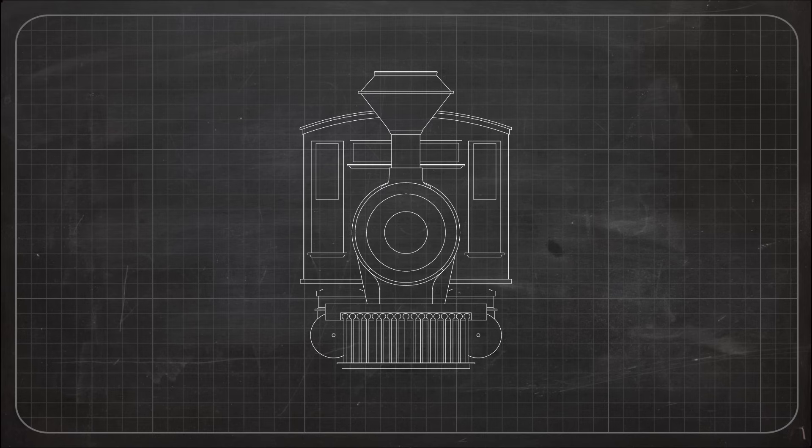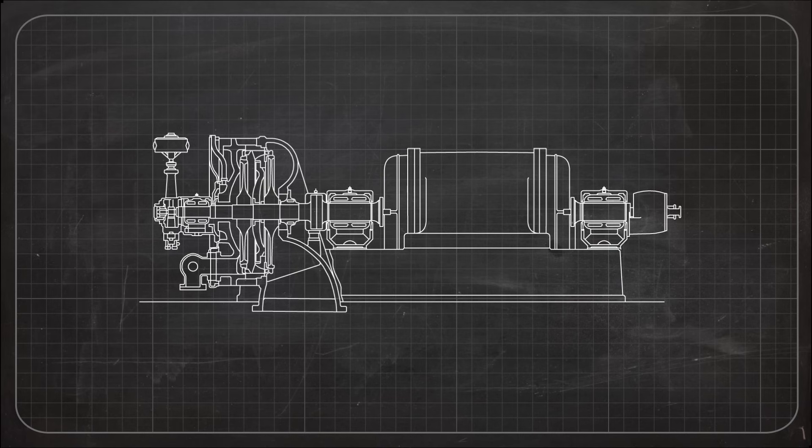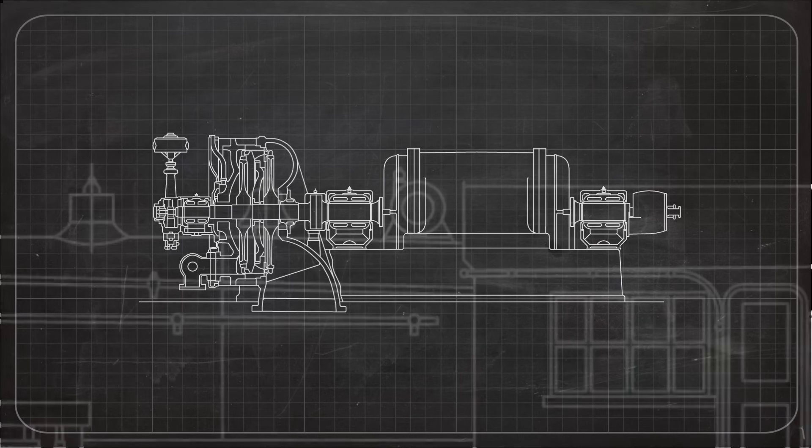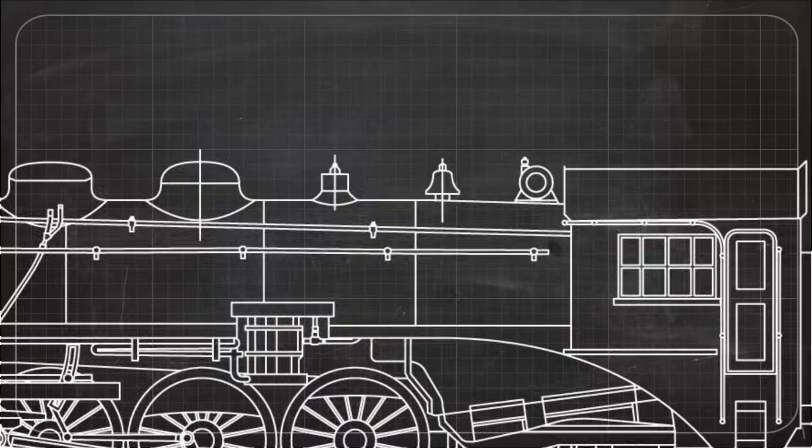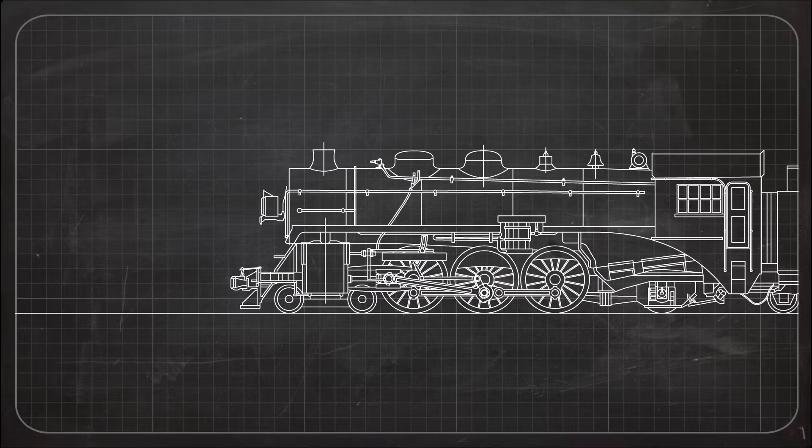The first locomotives simply used oil lamps mounted on their smoke box or running board, but as technology advanced, engineers developed a more effective solution: electric lighting powered by the locomotive itself.